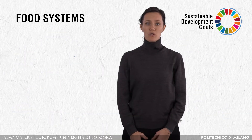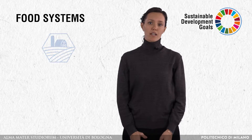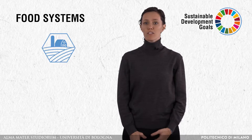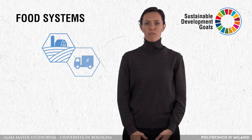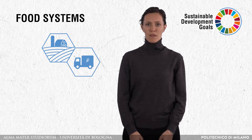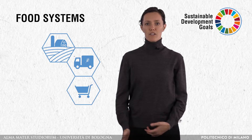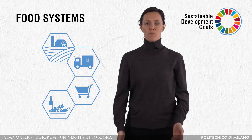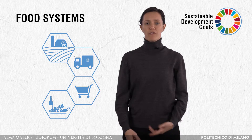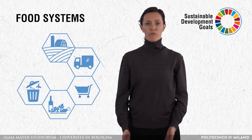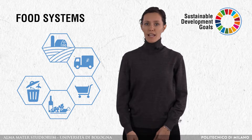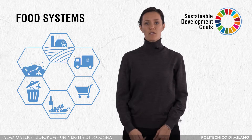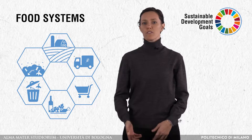Food systems indeed usually start with agriculture and farmers and their interaction with natural resources and environment. Then we find food industry and transportation. Then food arrives to retailers and sellers, like supermarkets, and finally on our tables. After that, it often becomes waste, food waste, and it can return back to nature, for instance as fertilizer or compost.